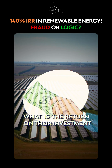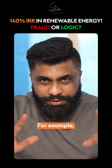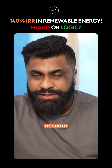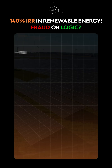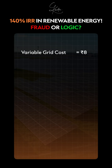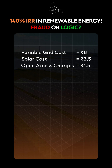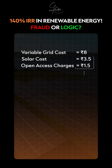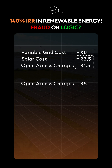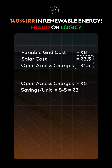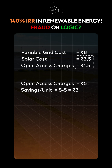For example, in this case, assume that their variable grid cost is eight rupees, solar cost is around three and a half rupees, and the open access charge is one and a half rupees. So the landed cost comes to around five rupees, which means they're saving three rupees per unit.